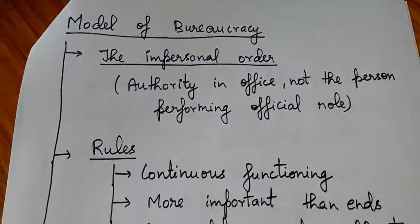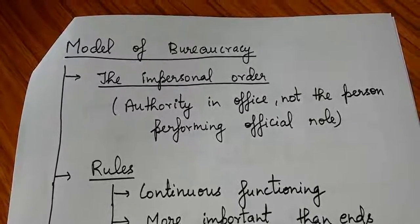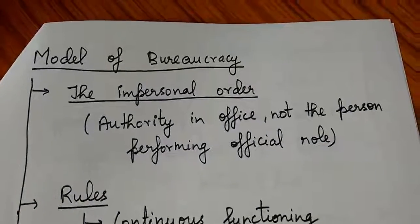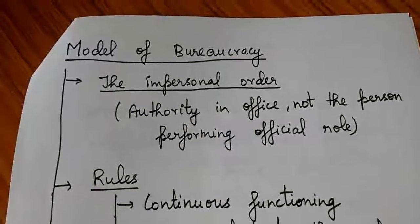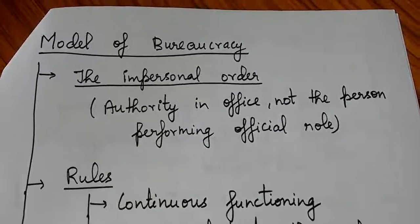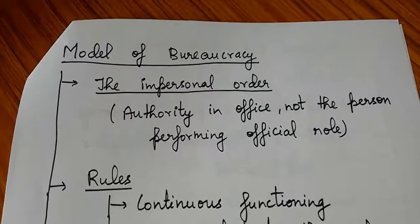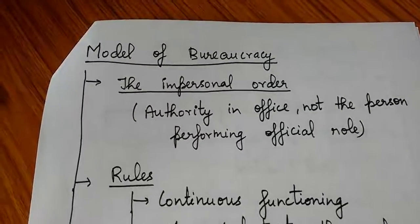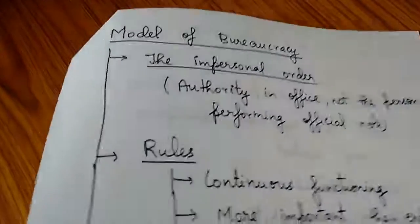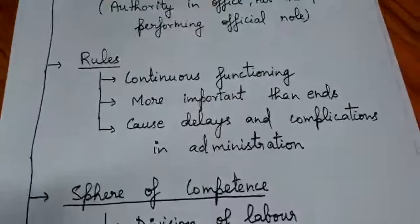Legal-rational bureaucracy is the best type of administration according to Weber, and it has specific characteristics to understand and write in examinations. The first characteristic is impersonal order: authority lies in the office, not the person performing the role. An IAS officer holds authority not by virtue of his own personality, but because of the office he holds.